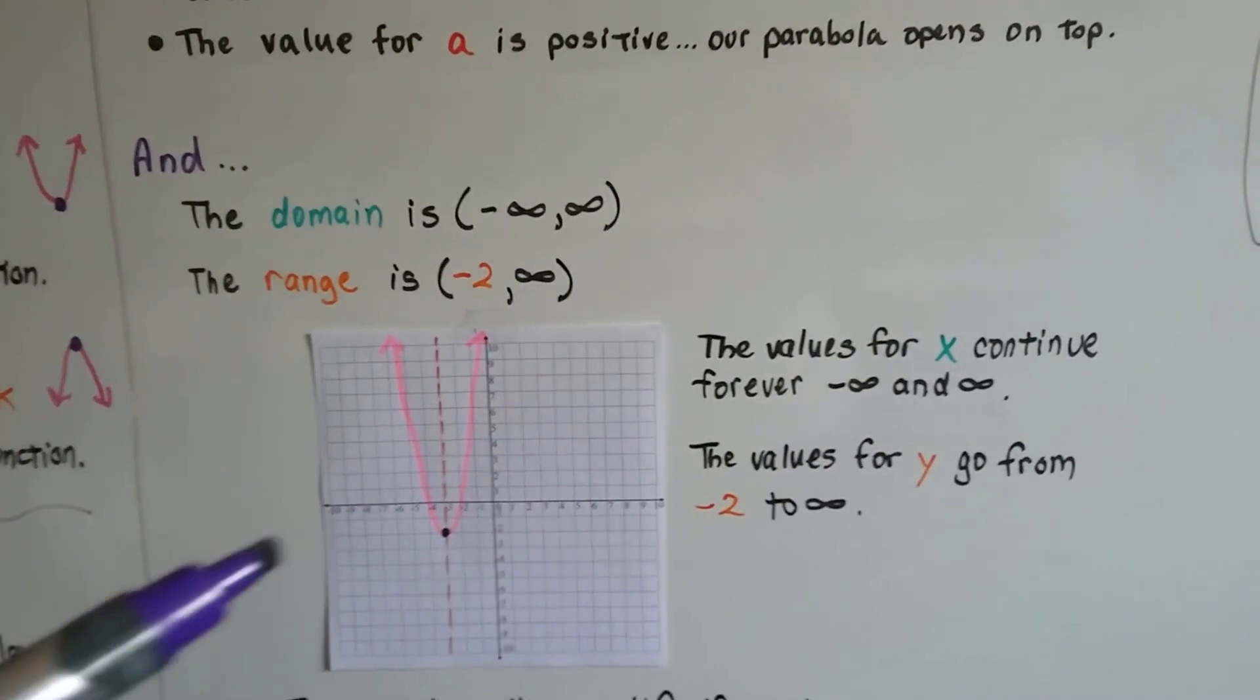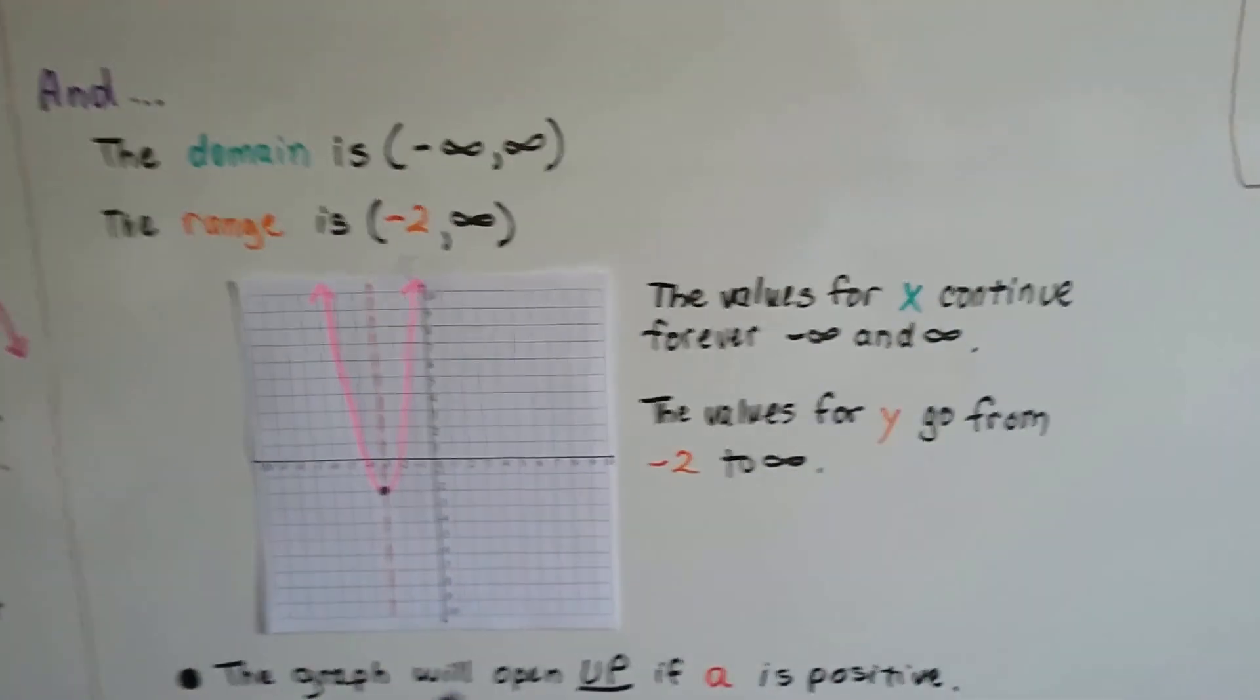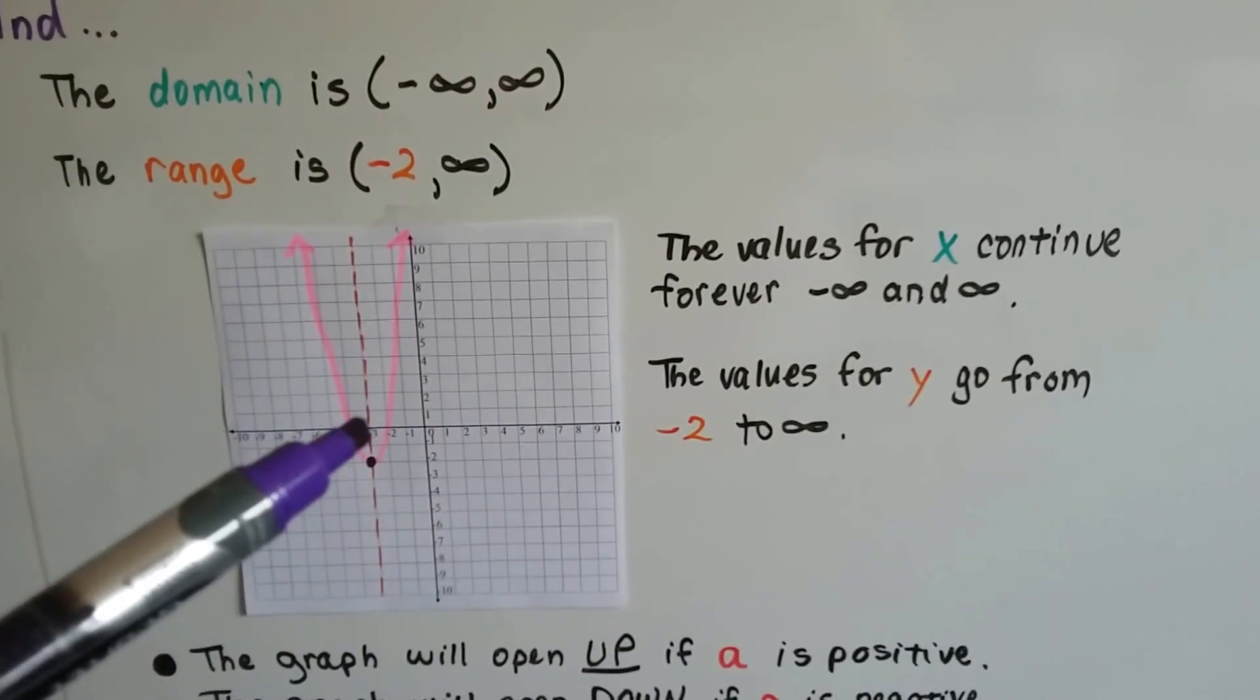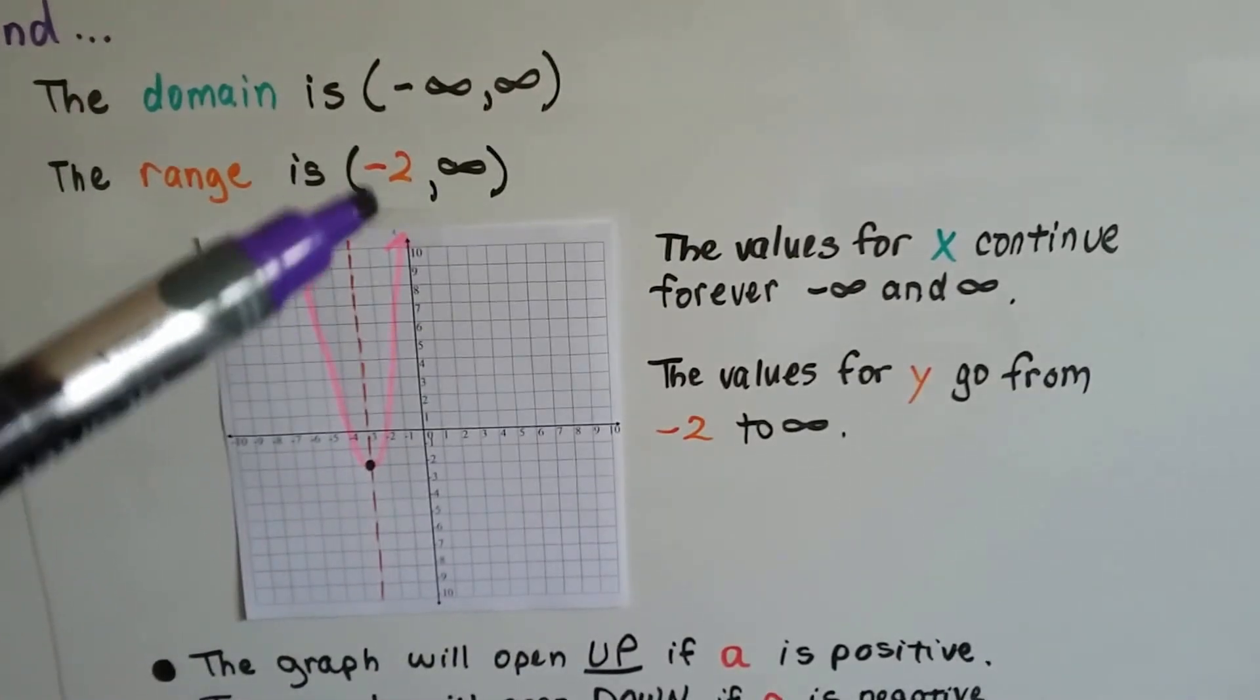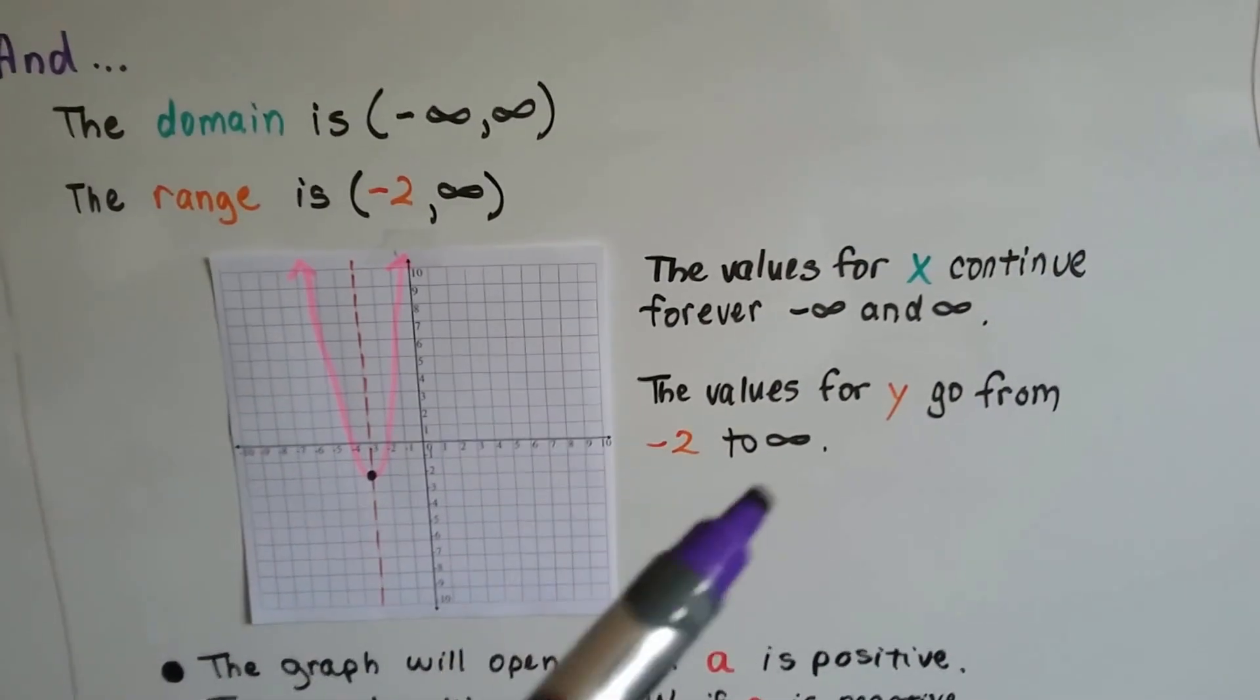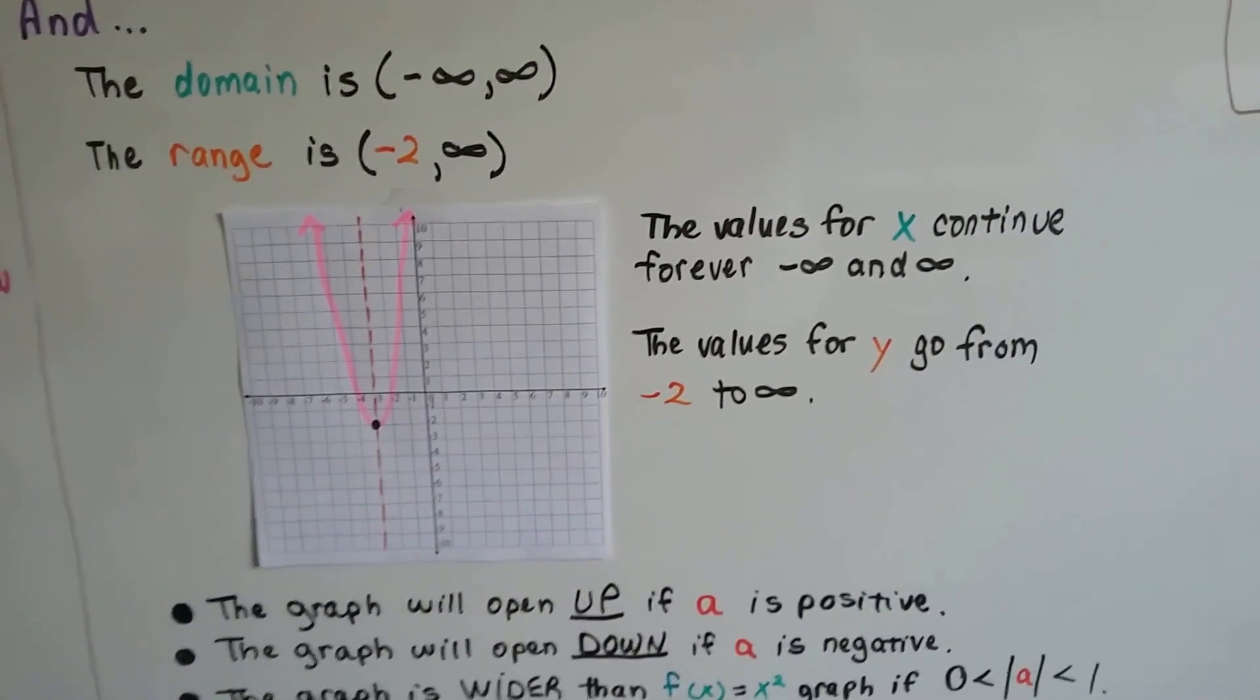And our range is [-2, ∞), because the values for y go from this negative two right here, and as the domain goes up into these values, the y continues up forever. So we have a negative two to infinity.